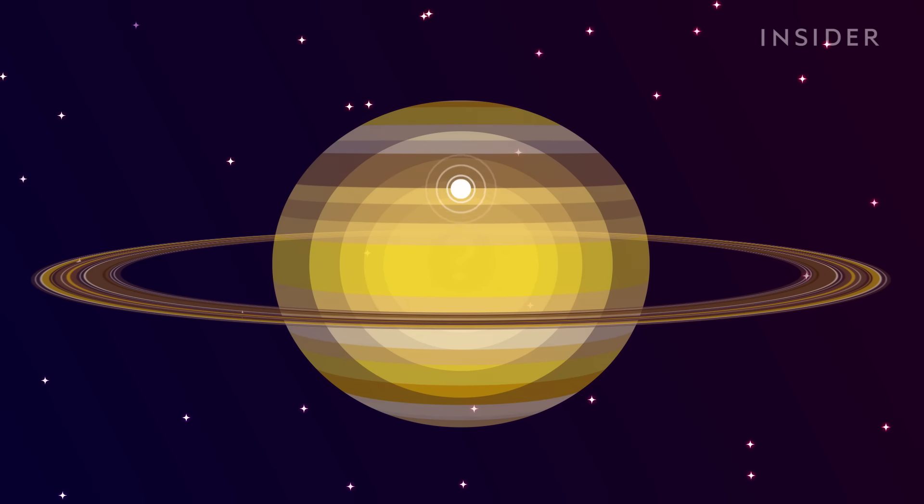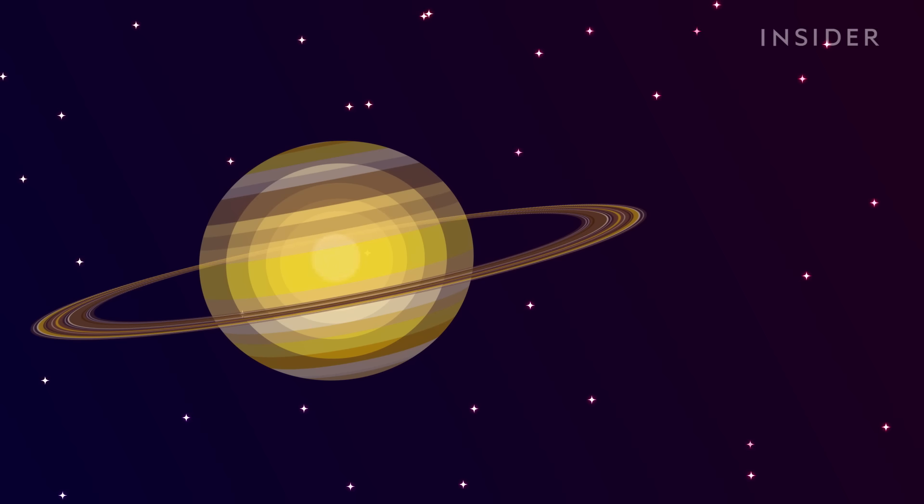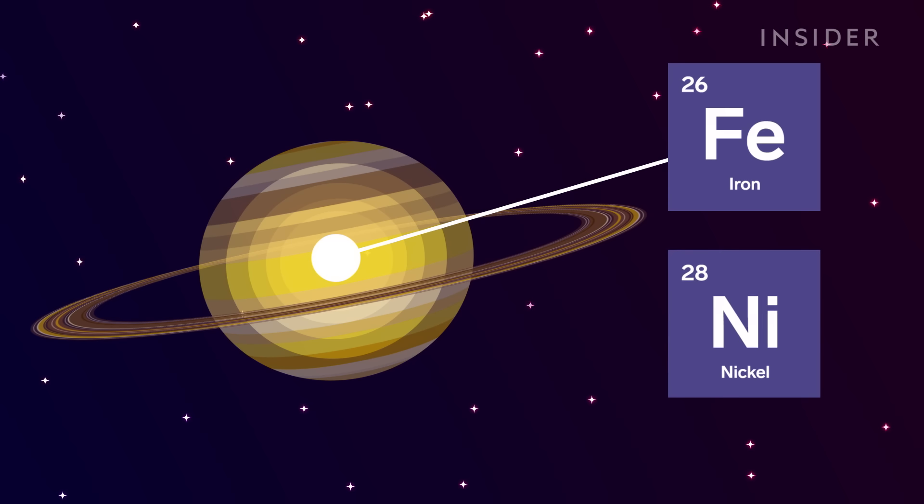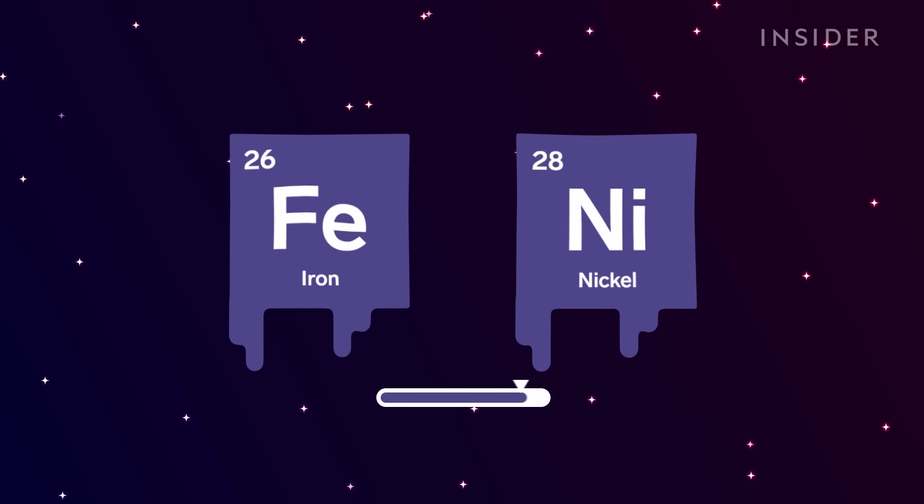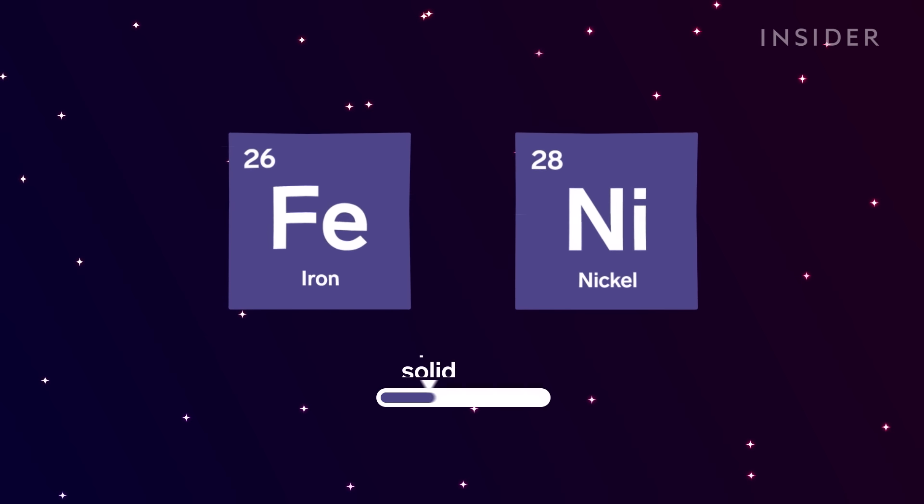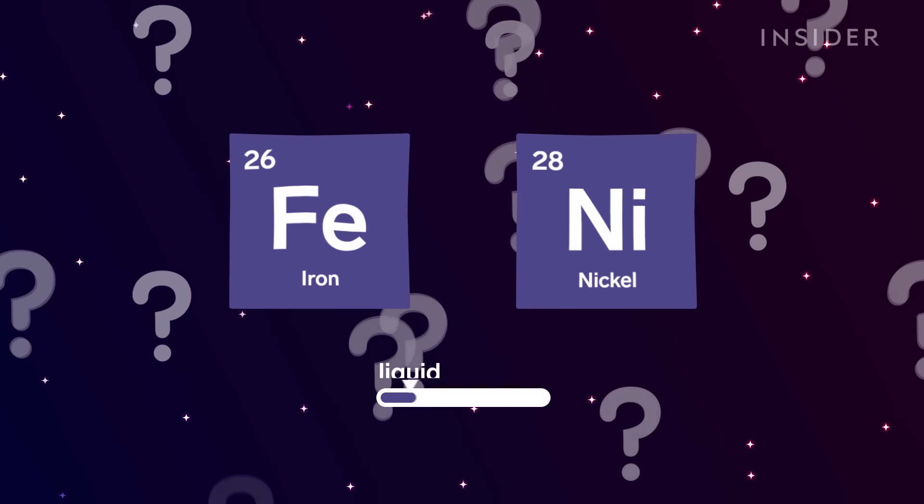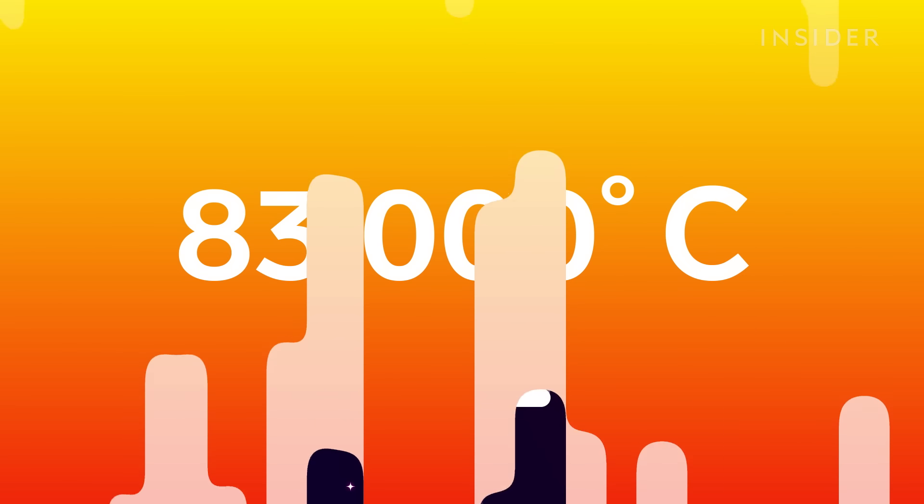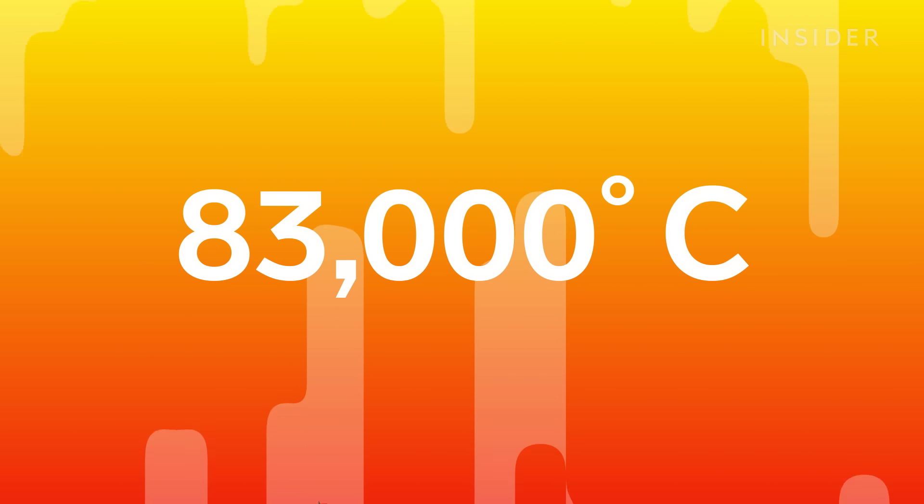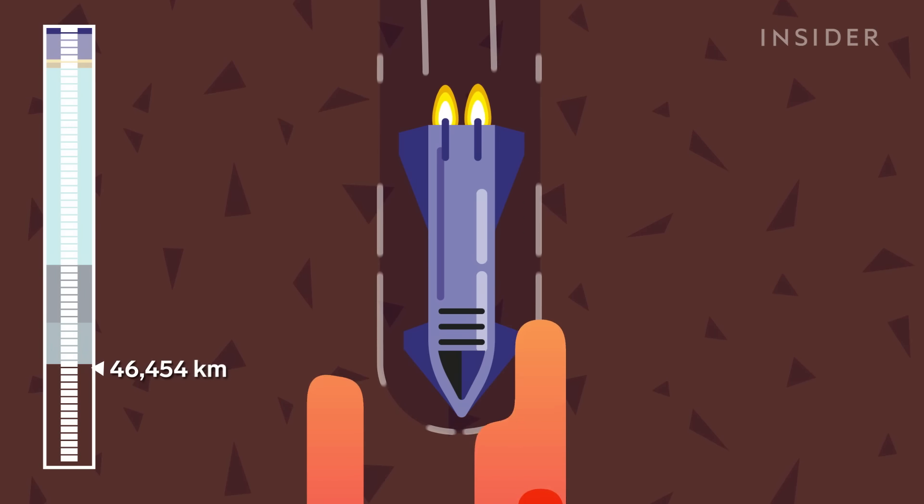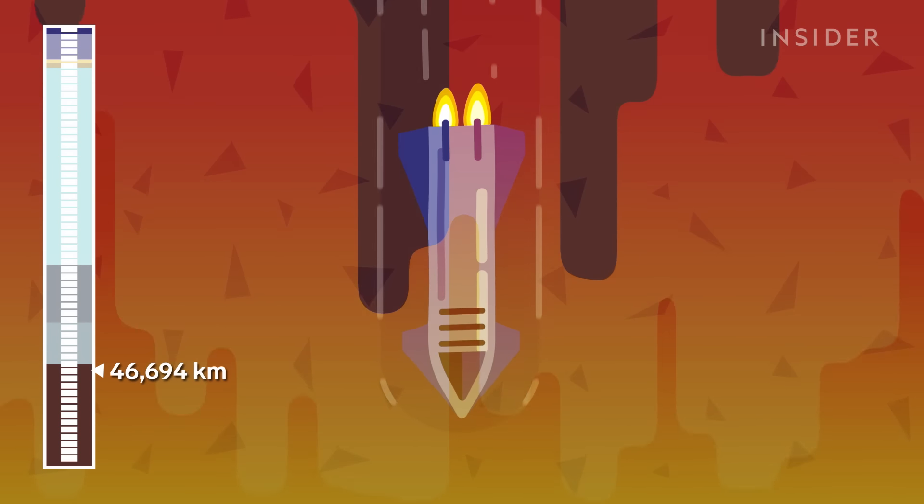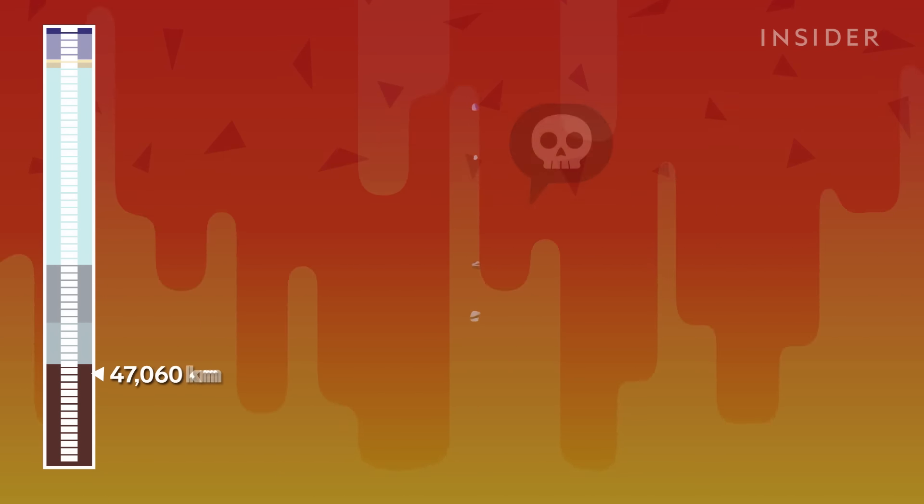But if we could survive here, our final stop might uncover a mystery in the deepest depths of Saturn. You see, scientists suspect Saturn has a core made of iron and nickel. But they're not sure if it's liquid like the previous layer or solid like Earth's core. So maybe we'll be the lucky ones to find out once and for all. Though, it's over 83,000 degrees Celsius in here, hotter than the surface of the Sun, and hot enough to dissolve our spacecraft, with us inside.